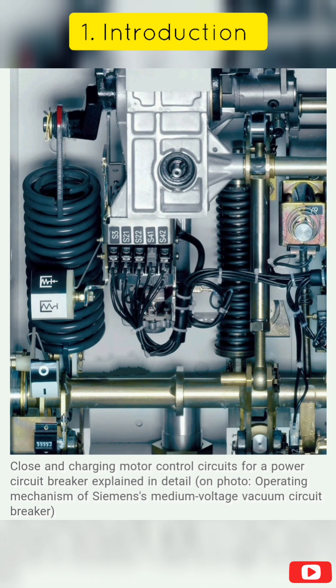Protection relays for medium voltage circuit breakers are not built within the circuit breaker like those for low voltage breakers, nor are they powered by the primary circuit's current. The safety relays are offered externally. Because of this, medium voltage circuit breakers rely on control power to precisely and consistently trip or open the breaker in the case of a malfunction. Since the availability of control power is critical to the protective function of a medium voltage circuit breaker, the control power source is extremely reliable.